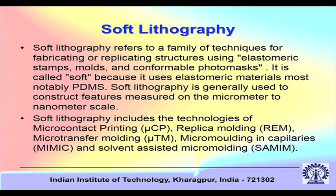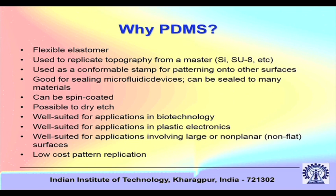A process related to lithography but using soft materials is soft lithography. Soft lithography refers to a family of techniques for fabricating or replicating structures using elastomeric stamps, molds, and conformable photomasks. It is called 'soft' because it uses elastomeric materials, most notably PDMS. Soft lithography is generally used to construct features measured on the micrometer to nanometer scale. Techniques include micro-contact printing, replica molding, micro transfer molding, micro molding, and soft-assisted micro molding.